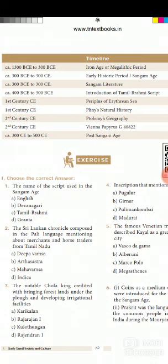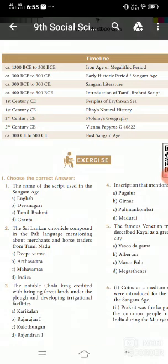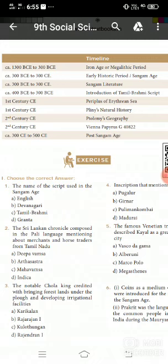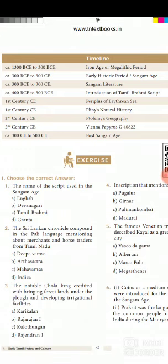In the timeline chart, the first period is 1300 BCE to 300 BCE. BCE means Before Common Era. This period is called the megalithic period, also known as the INH period. This is listed in the first column of the timeline.